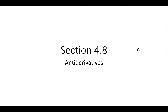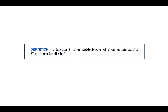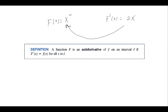Section 4.8: antiderivatives. An antiderivative is the opposite of a derivative. For example, if capital F of x equals x squared, then the derivative is 2x. The antiderivative is the reverse process — going from 2x back to x squared. So a function capital F is an antiderivative of small f, where small f is 2x.